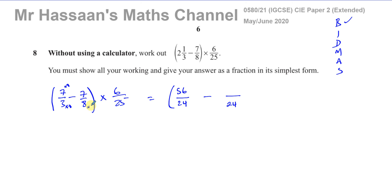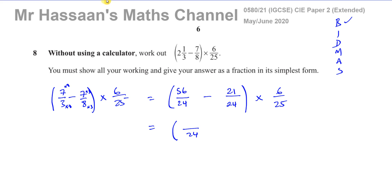To make the denominator 8 into 24, multiply by 3, so the numerator 7 times 3 gives 21 — that's 21 over 24, and this result will be multiplied by 6 over 25 at the end. Now with the same denominator of 24, we can subtract: 56 minus 21 is 35. So we have 35 over 24, multiplied by 6 over 25.